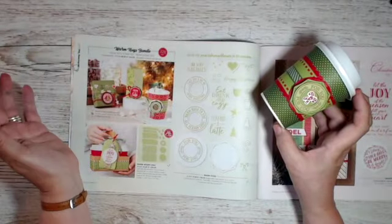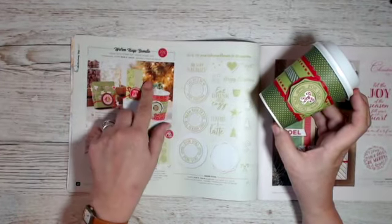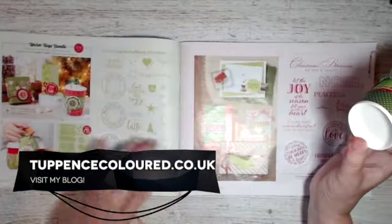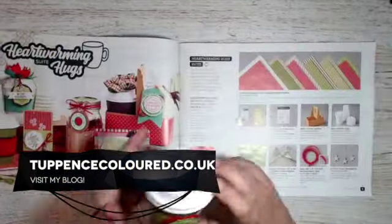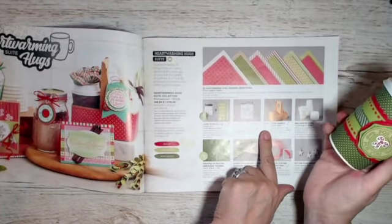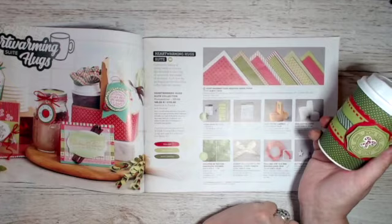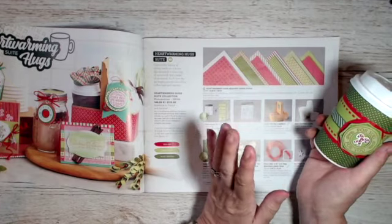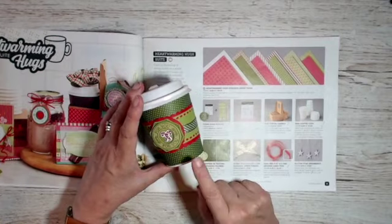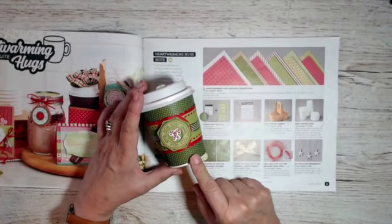In the August-December Stampin' Up! mini catalogue, we have this bundle, the Warm Hugs bundle. You can also get mini coffee cups and a mini coffee cup carrier, which I haven't used in today's project, but which I will. So I've been having a little bit of a play with it, and this is what I have done.